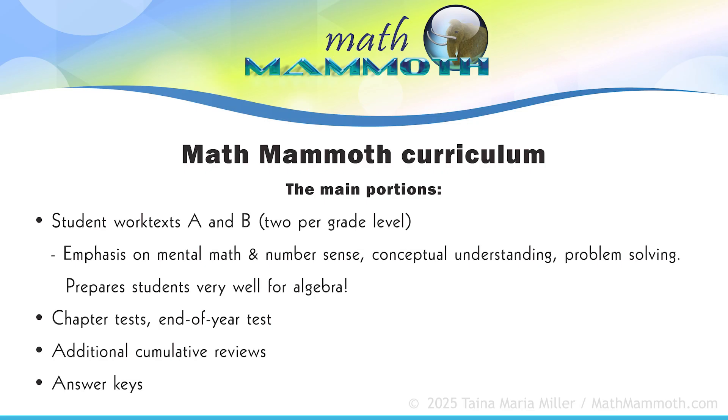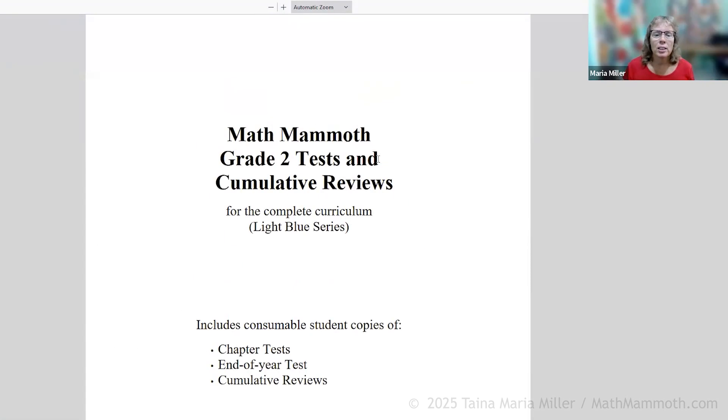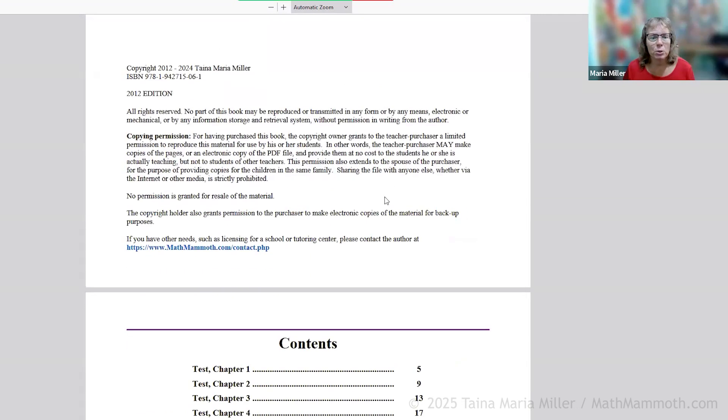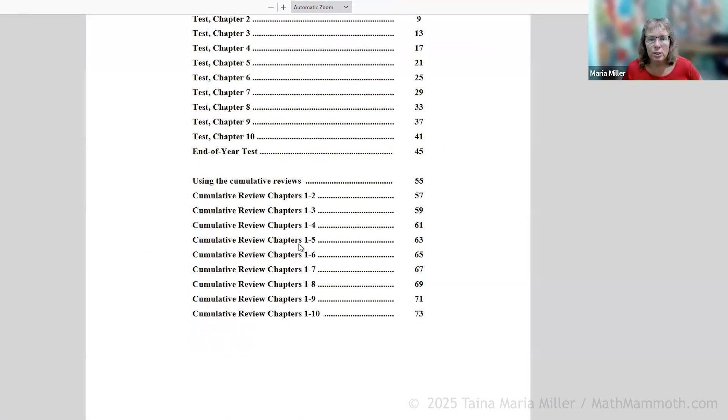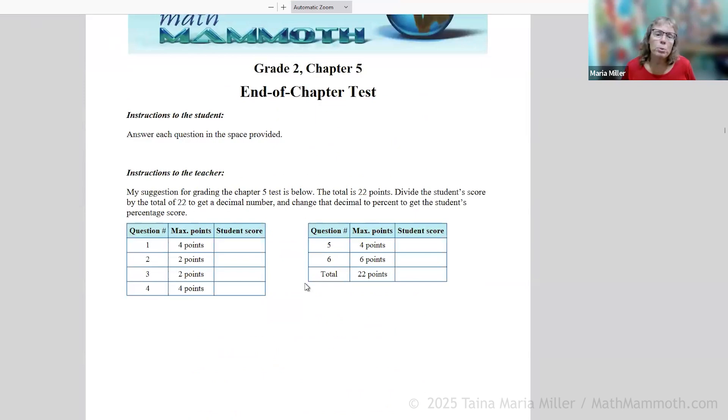Chapter tests, end of year test, additional cumulative reviews. If you have a printed version, then this is what you have. You have one single book with all the tests and cumulative reviews. There's a test for each chapter, end of year test, and then these cumulative reviews. These are optional.